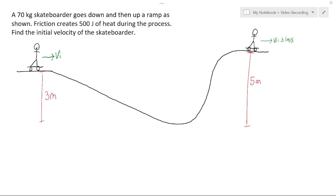A 70 kg skateboarder goes down and then up a ramp as shown. Friction creates 500 joules of heat energy during the process. Find the initial velocity of the skateboarder.